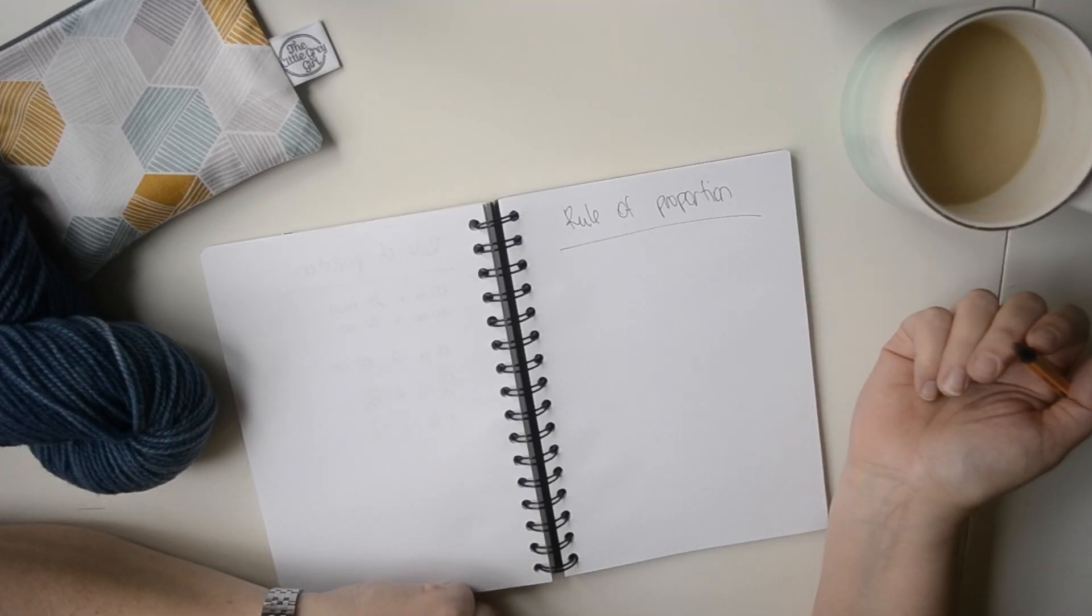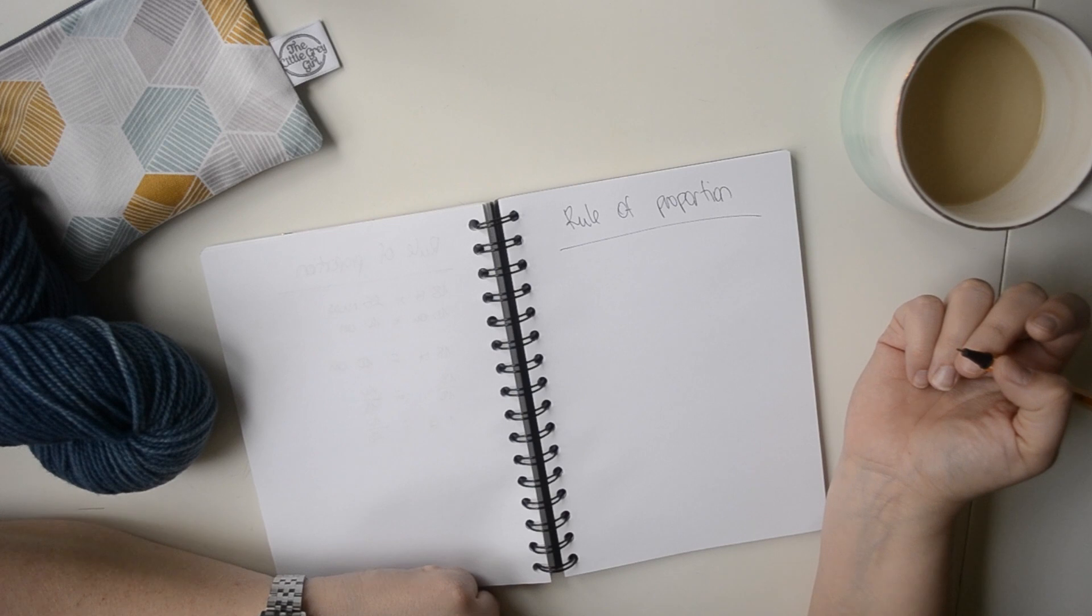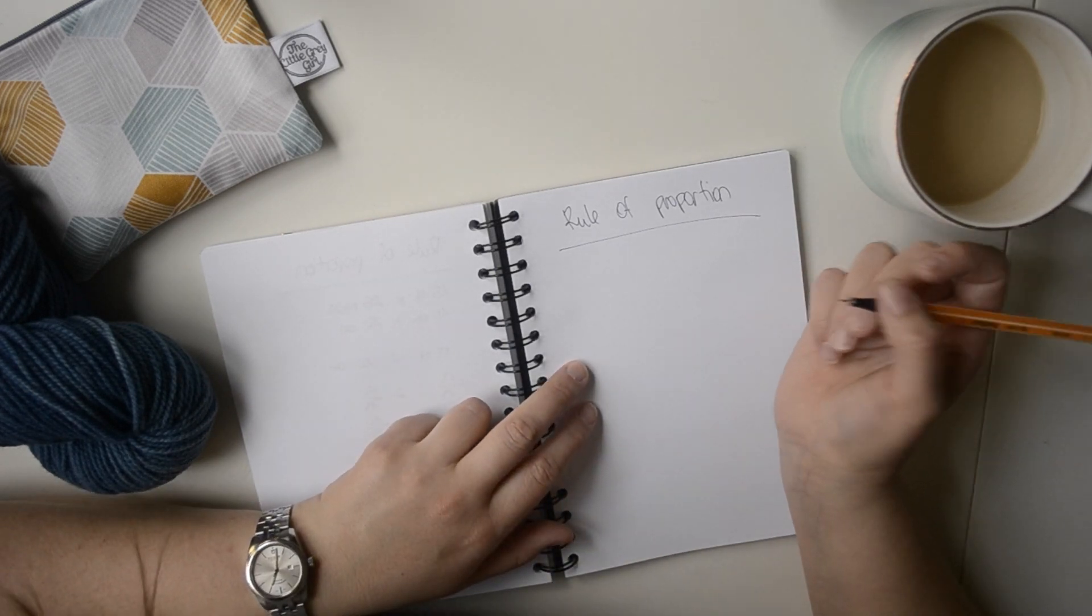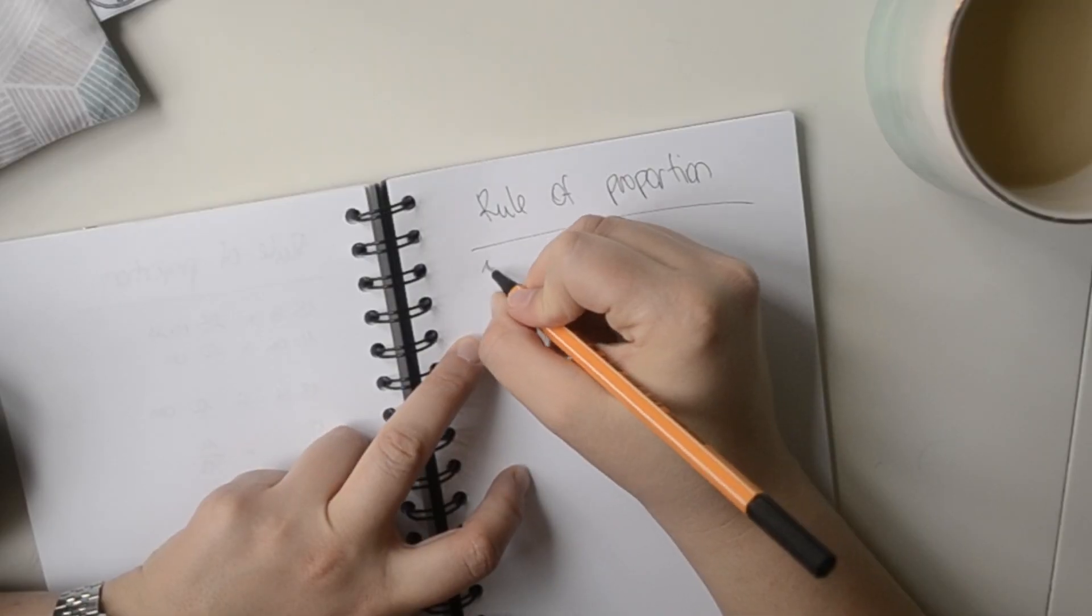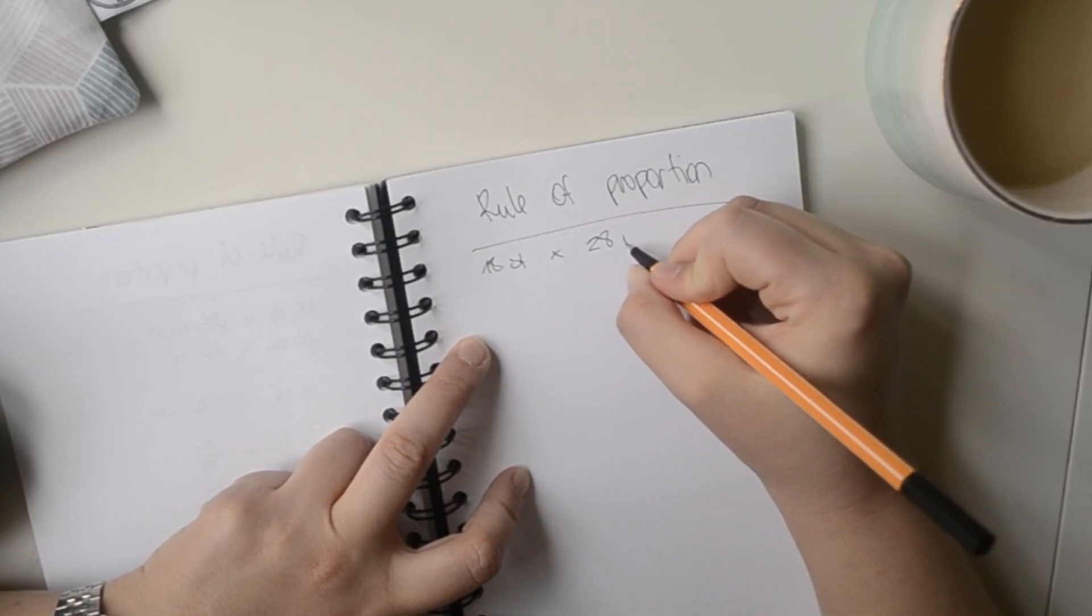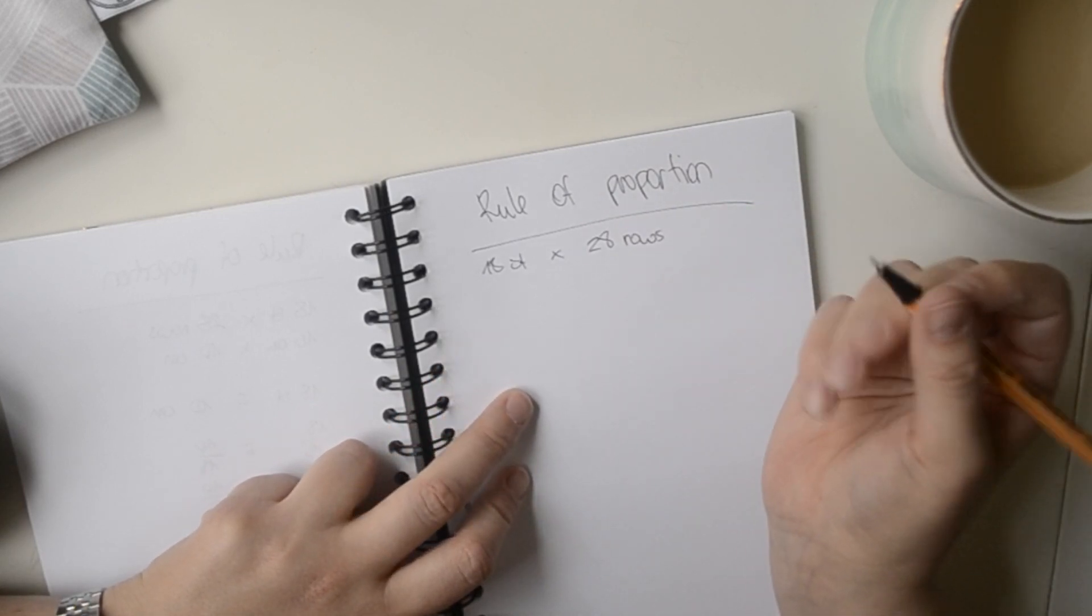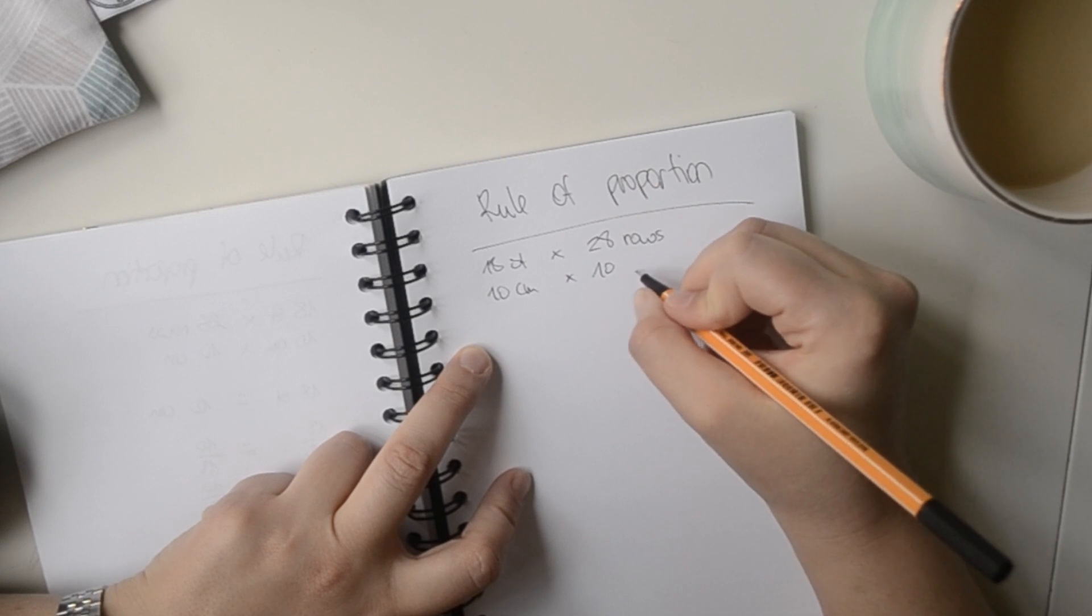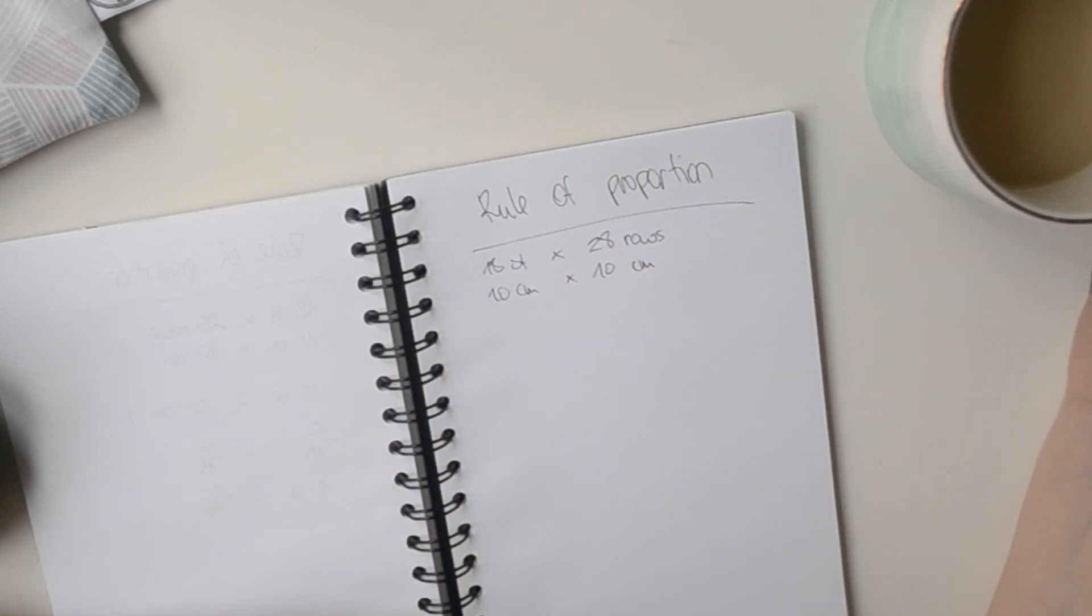The calculation that I'm talking about is the rule of proportion. You would use this when you, for example, know that you have made a swatch and you are having 18 stitches and 28 rows are equal to a square of 10 cm x 10 cm.